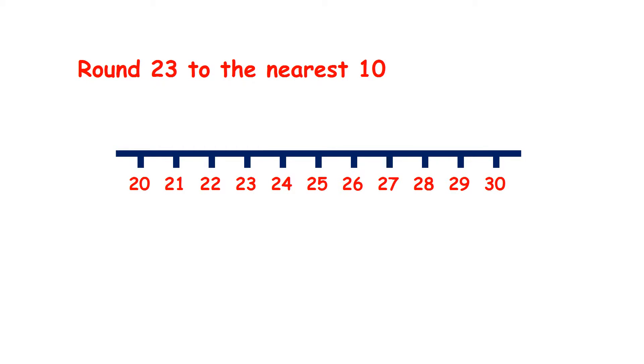So we're going to round two-digit numbers to the nearest 10. Here we have to round 23 to the nearest 10. And to the nearest 10 means to the nearest multiple of 10.